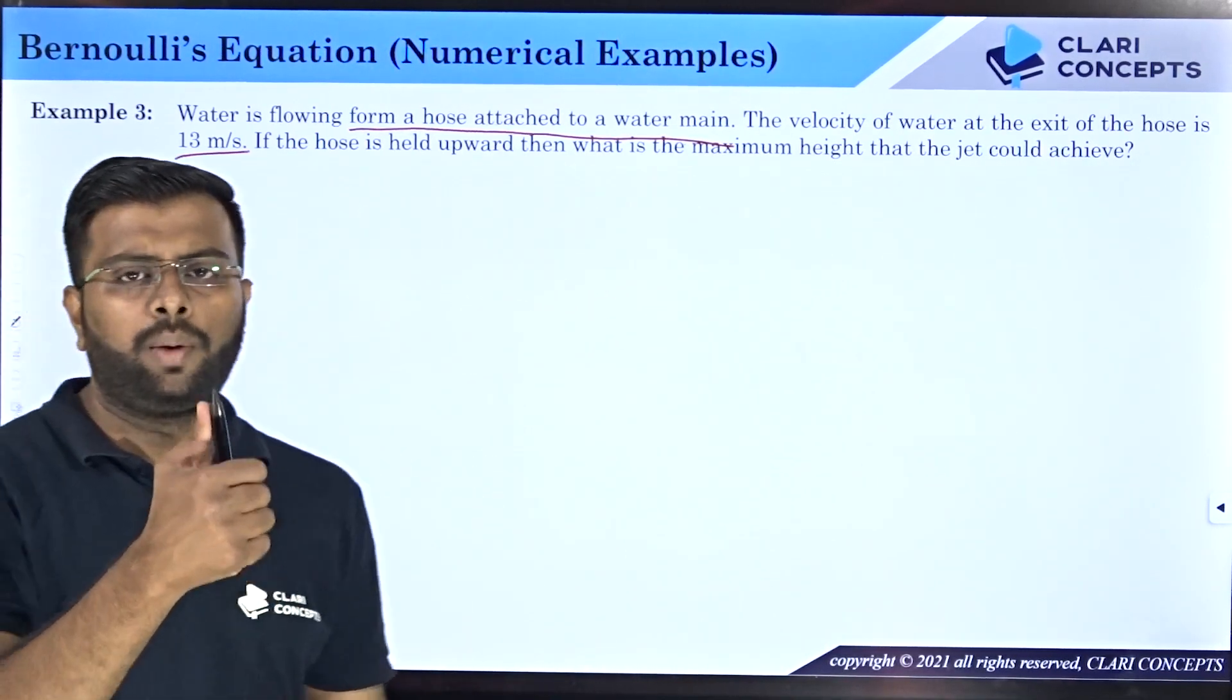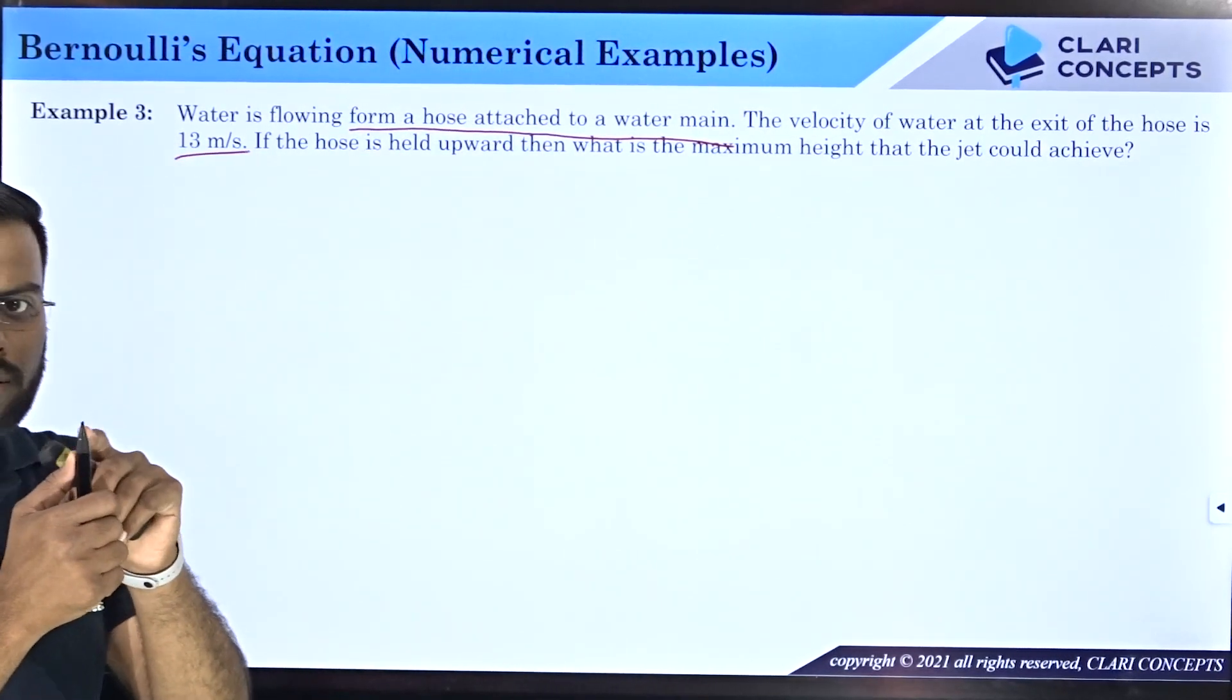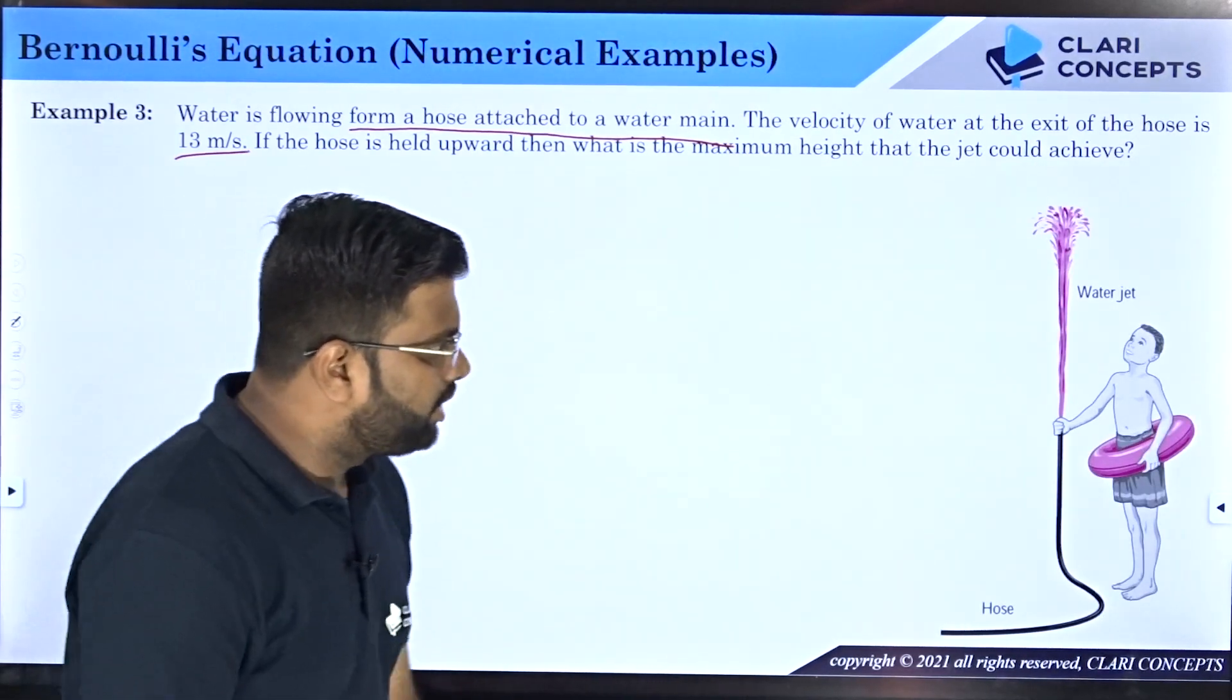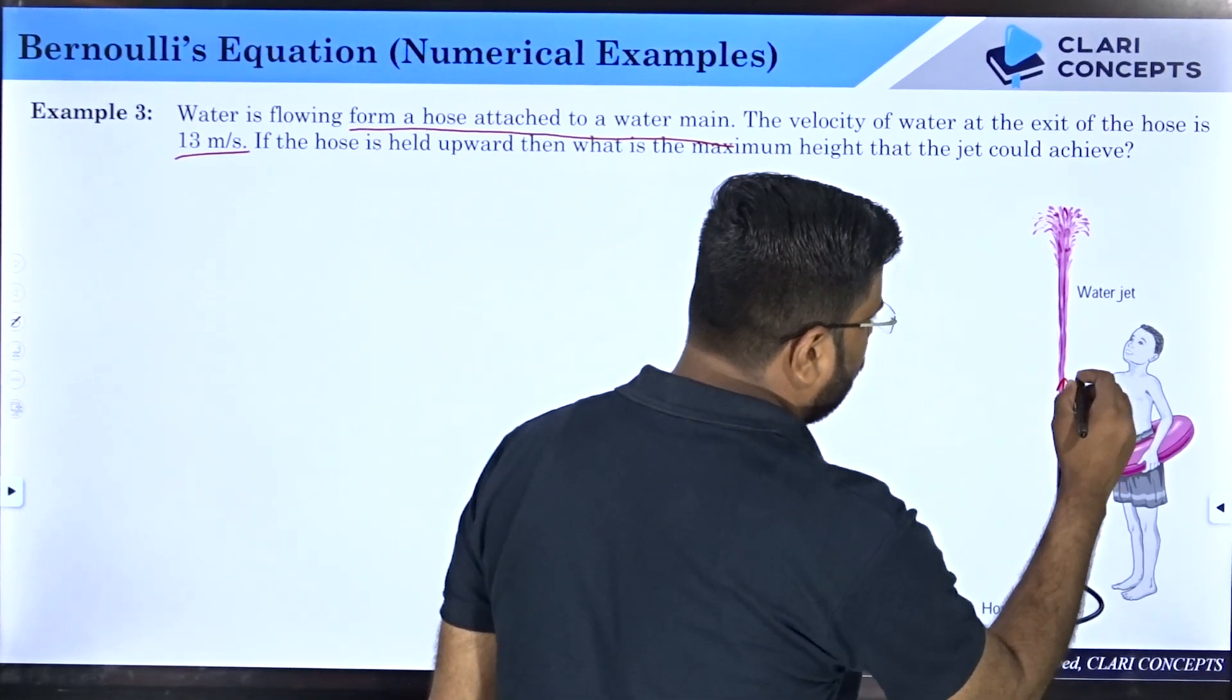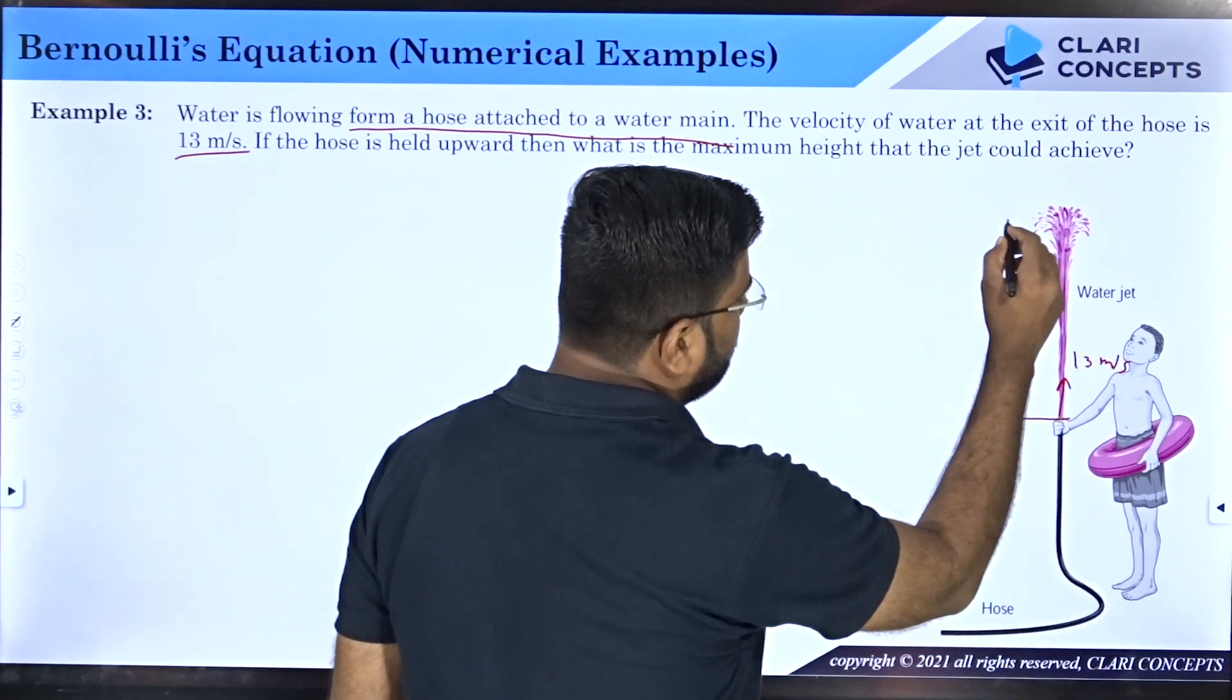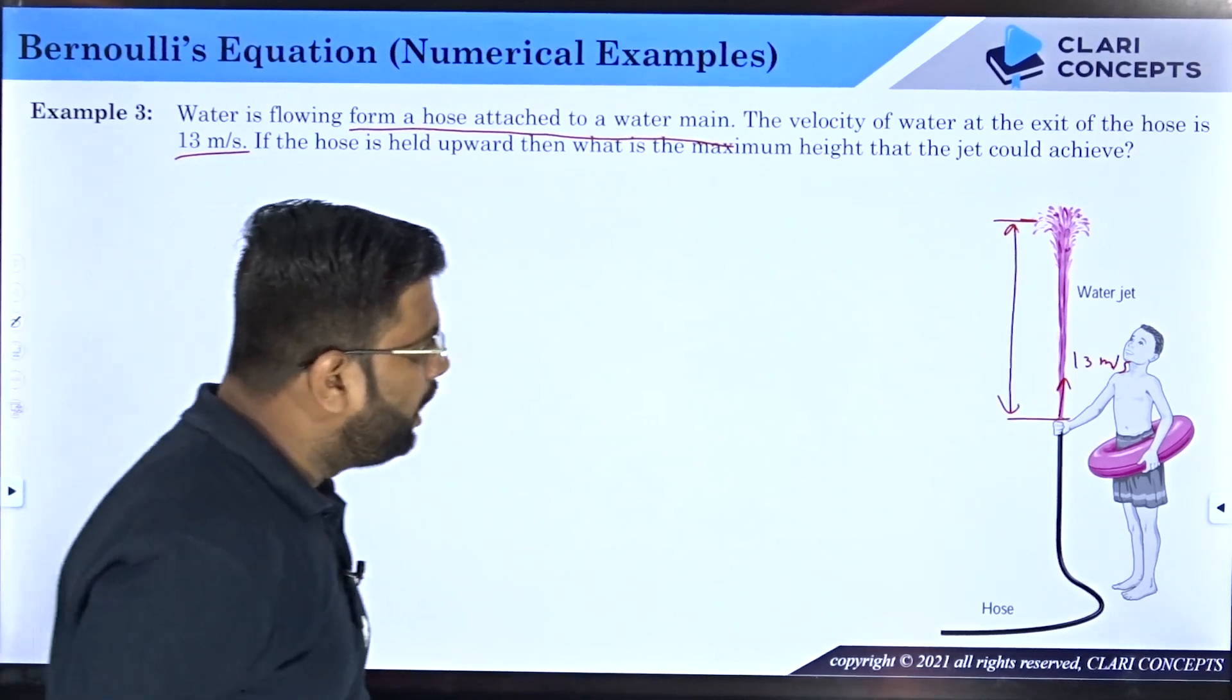They're asking: if the water hose is kept upward and water comes upward, what is the maximum height that the water could achieve if the velocity from where the water is leaving is 13 meters per second? Let me show you the diagram. Say, for example, a small child is playing with this hose. When the water comes out of this particular hose, velocity is 13 meters per second. The question is: what is the maximum height to which the jet should flow?